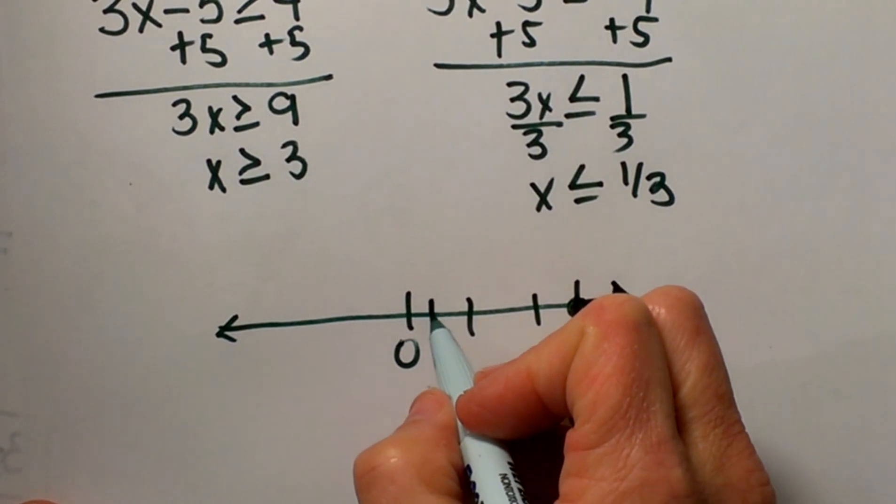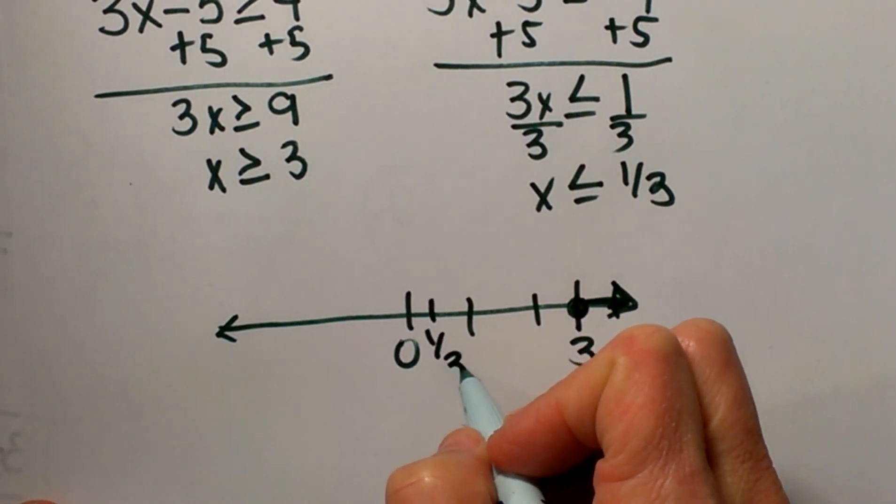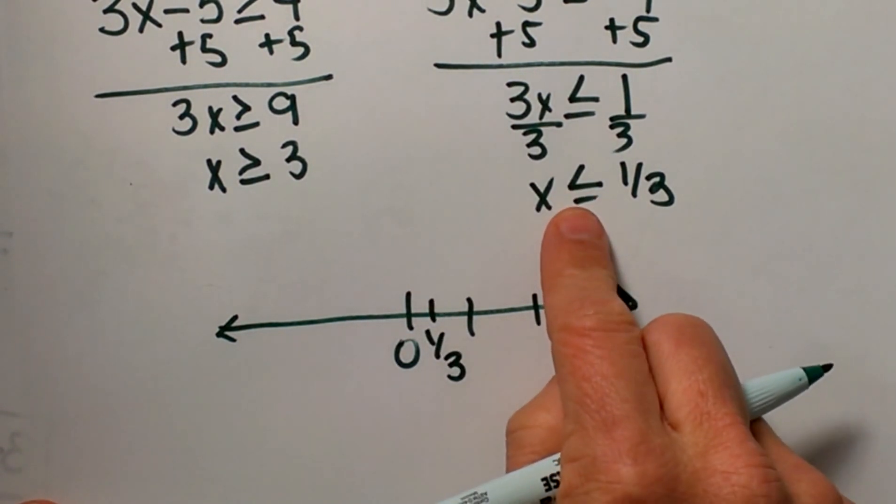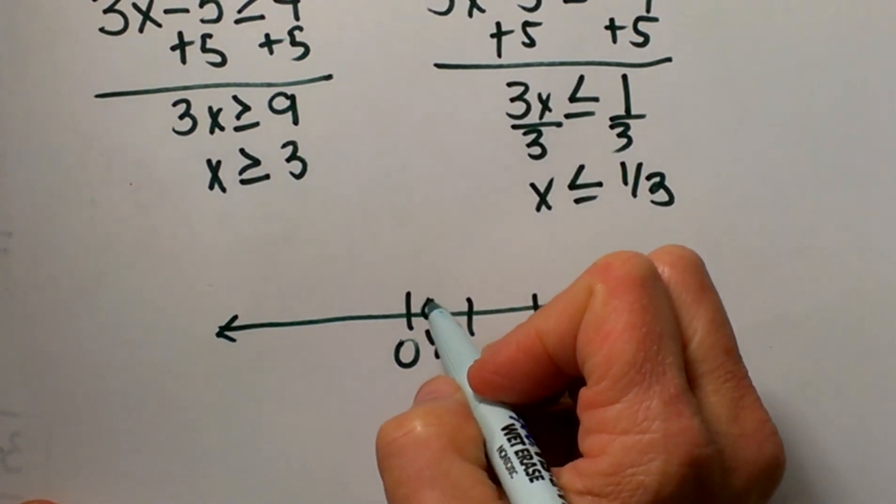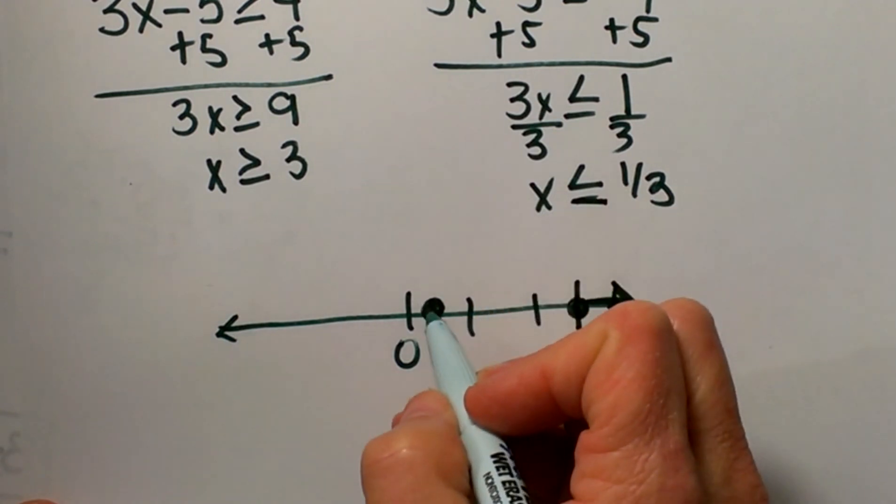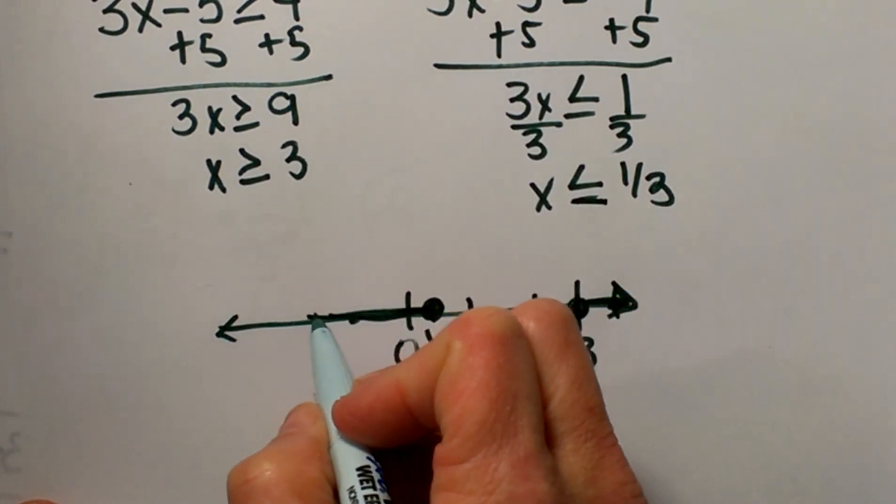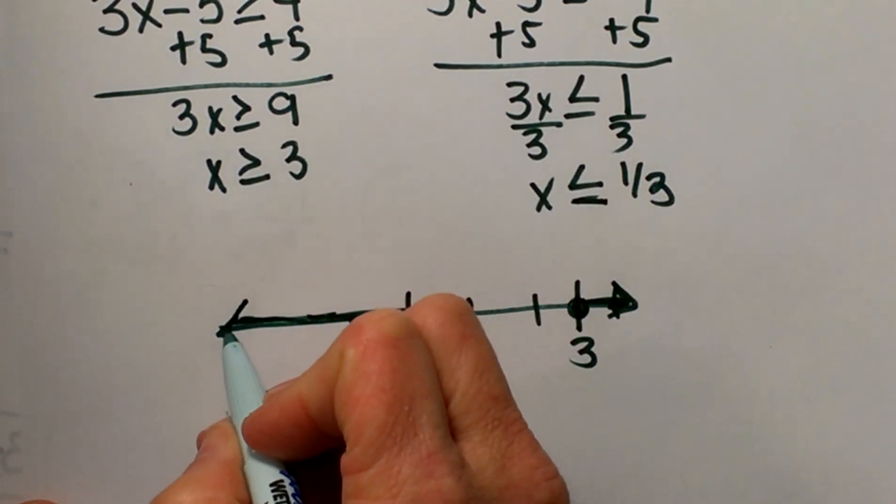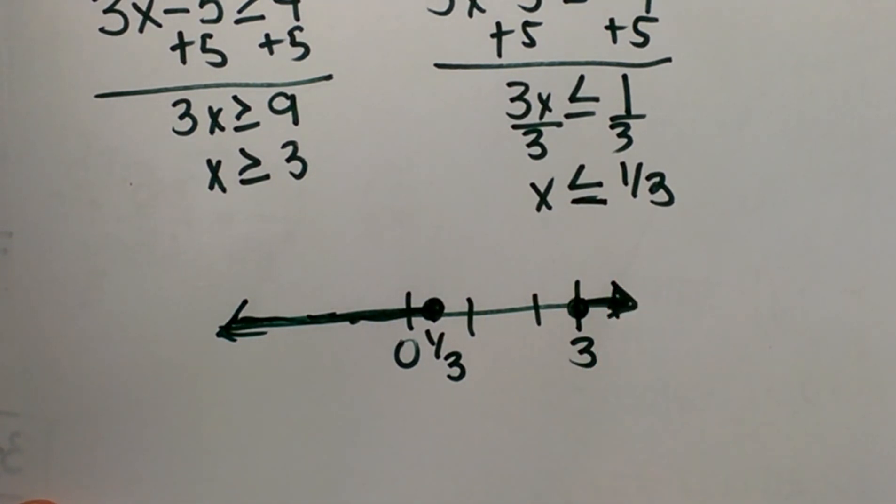And then 1/3 falls right here between 0 and 1. Again, I'm going to use a solid point because it's less than or equal to, and then I shade all the values less than 1/3. Since 0 is less than 1/3, I'm shading in this direction. So that's my inequality on a number line, and that's how you solve an absolute value inequality.